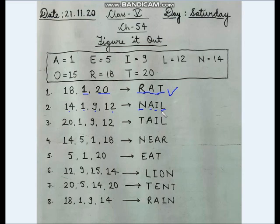Question number 3: the word made up by letters 20, 1, 9, 12 is what animals like dogs and cats have at the end of their body. Decoding: 20 is T, 1 is A, 9 is I, 12 is L. The answer is tail.